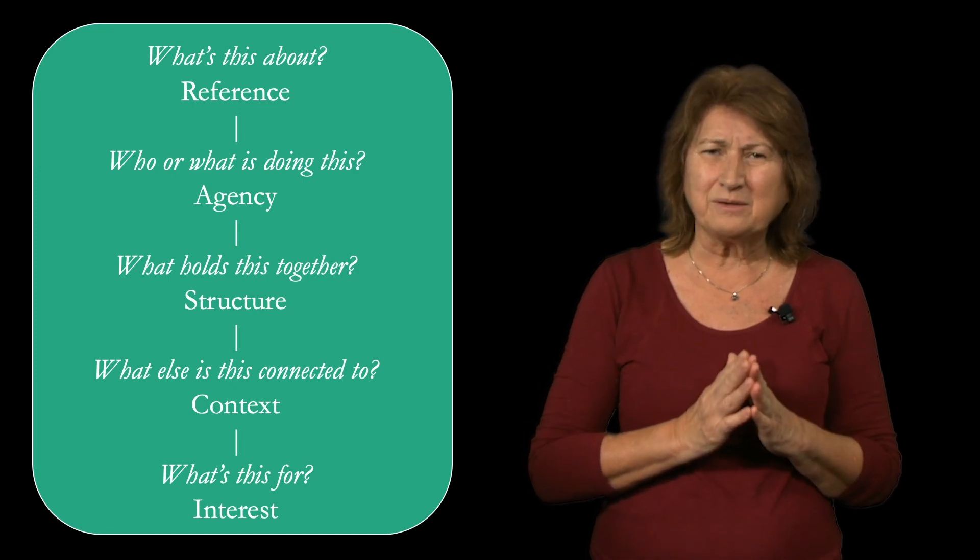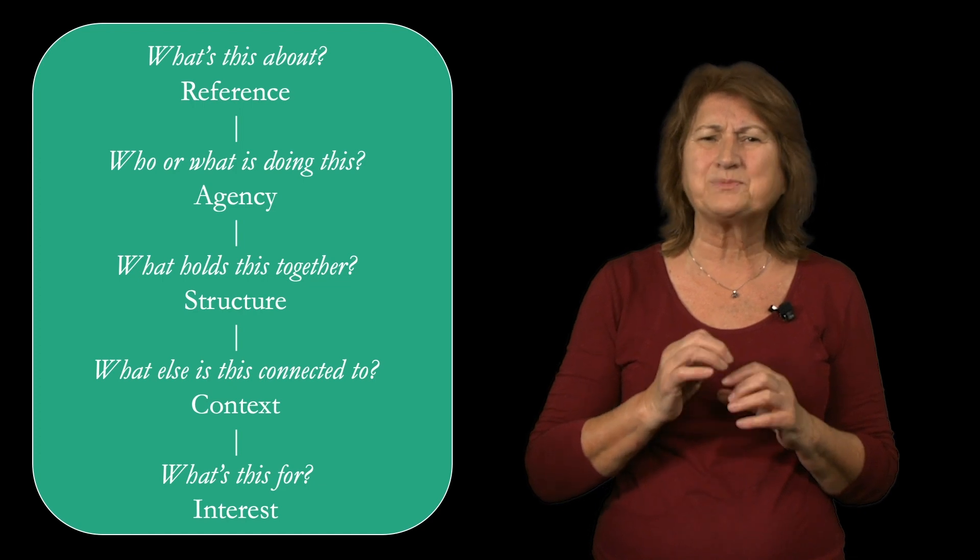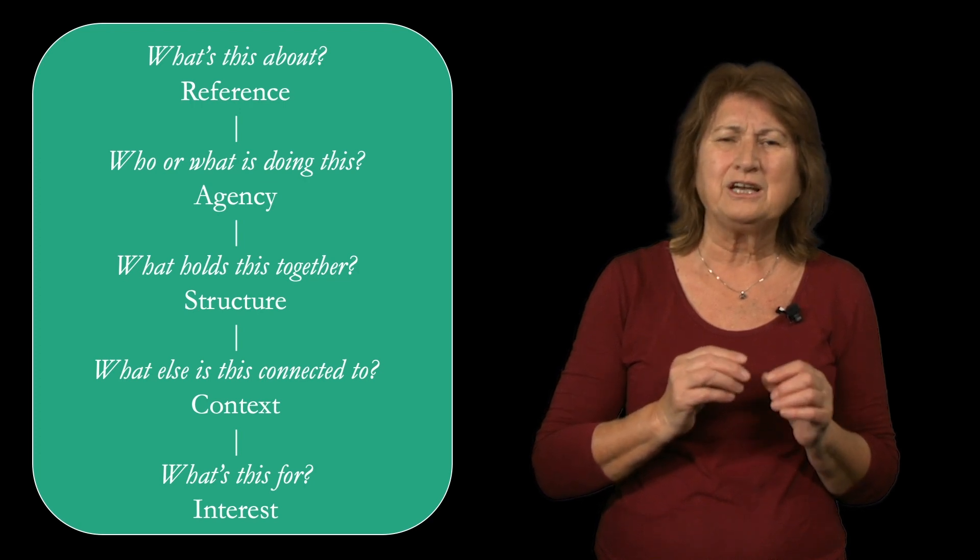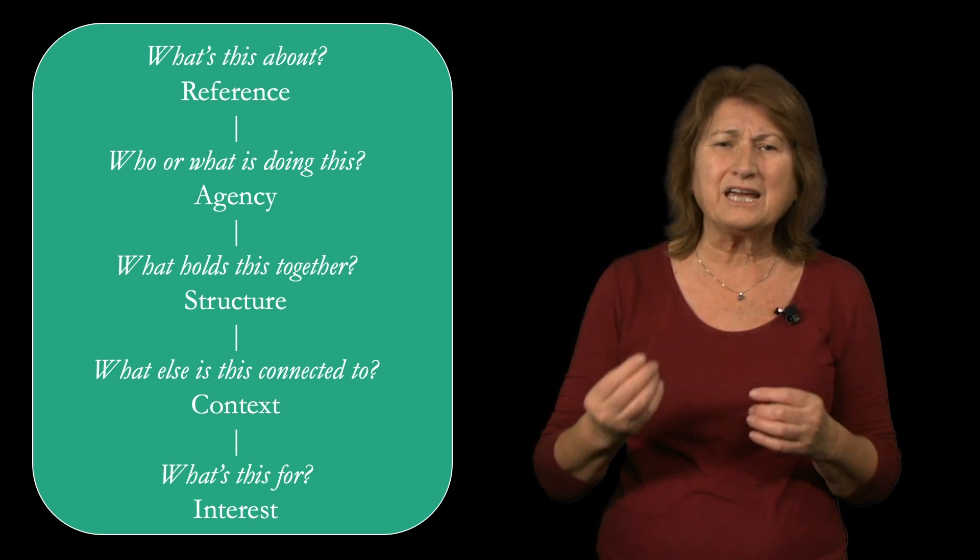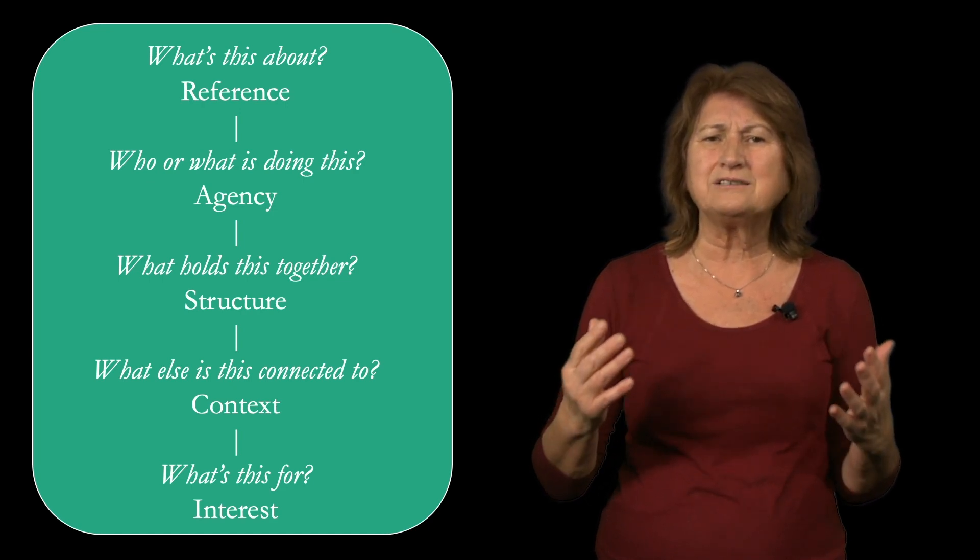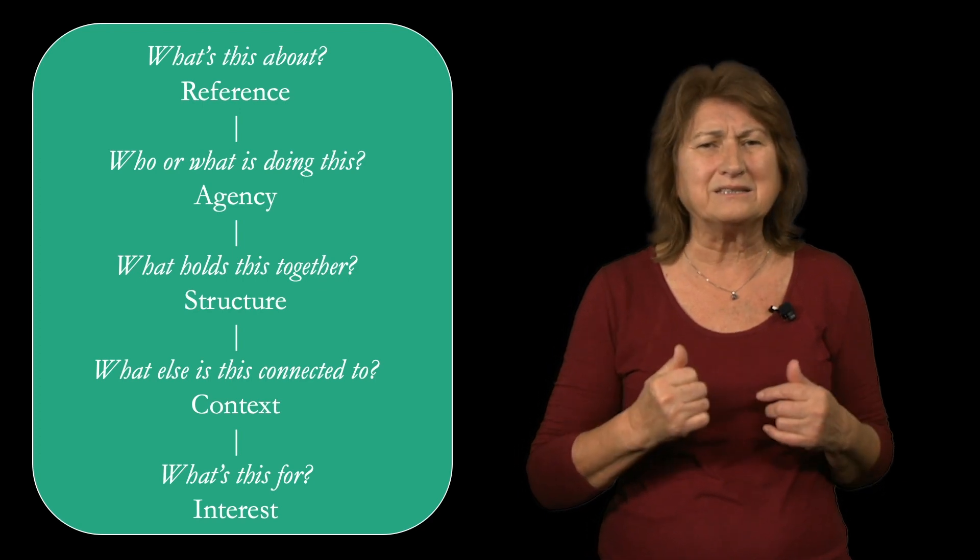We call this a functional grammar because our focus is on what meaning does—its purposes. With these five functions, we want to develop a shared pattern language able to explain how text, image, space, object, body, sound, and speech work together to convey the same meanings.